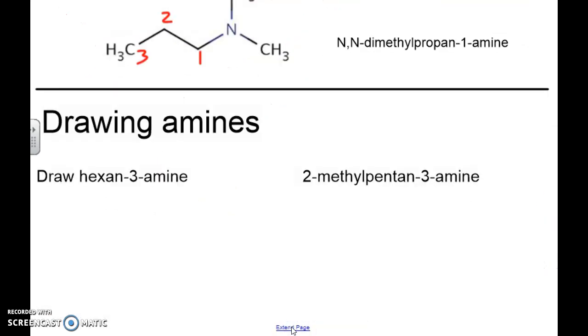Now in terms of drawing them, because there are no Ns here, this is going to be a primary amine, so I can write NH2. Now it's going to be at spot 3. So 1, 2, 3, 4, 5, 6. That's what that one's going to look like for hexan-3-amine. Now this one here is going to be pentan-3-amine. So 1, 2, 3, 4, 5. This is NH2, and this is CH3.